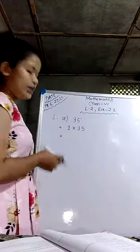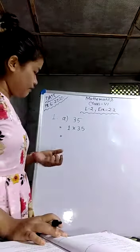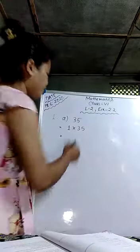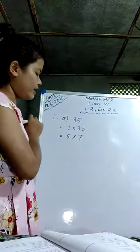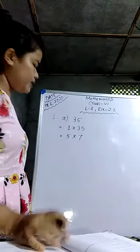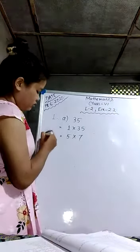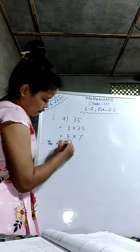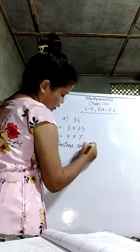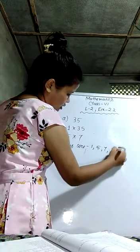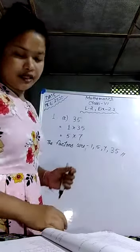With 2, we cannot multiply to get the number 35. So the next number will be 5. 5 times 7 is 35. The product of 5 and 7 is 35, and the product of 1 and 35 is 35. No more numbers are there. Therefore, the factors of 35 are 1, 5, 7, and 35.